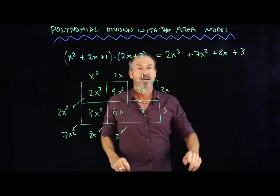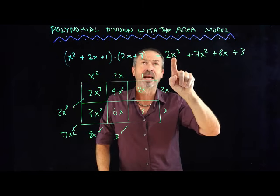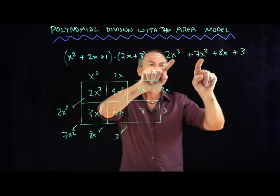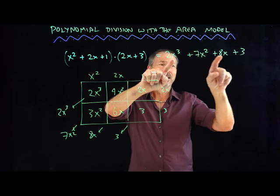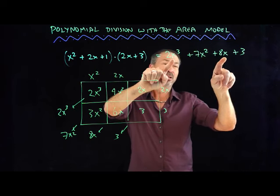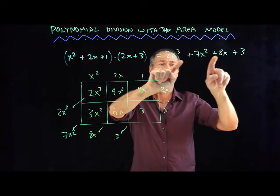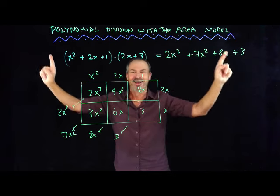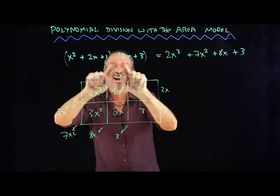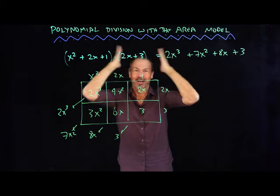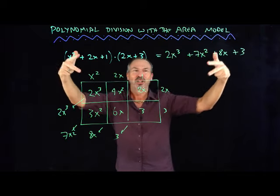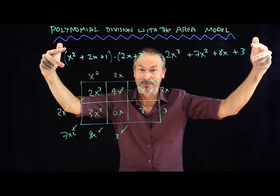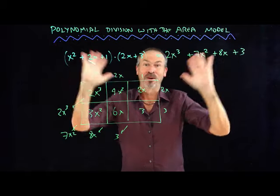9 times 7 equals 2 times 8 — that's 16 — plus 7 times 4, which is 28 — that's 44 — plus 8 times 2 is 16, making 60, plus 3 is 63. And 9 times 7 is indeed 63. So actually, we've just done an infinitude of arithmetic problems by going to algebra.